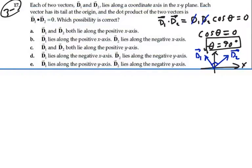So as we look at our possibilities, we have d1 and d2 both lie along the positive x-axis. That's not going to work, because they're going to be parallel then, they're not going to be perpendicular.